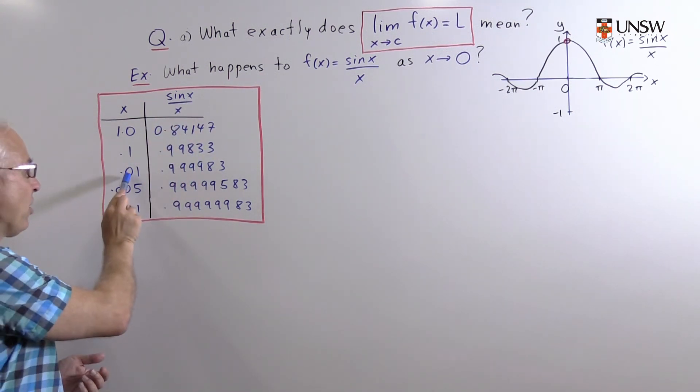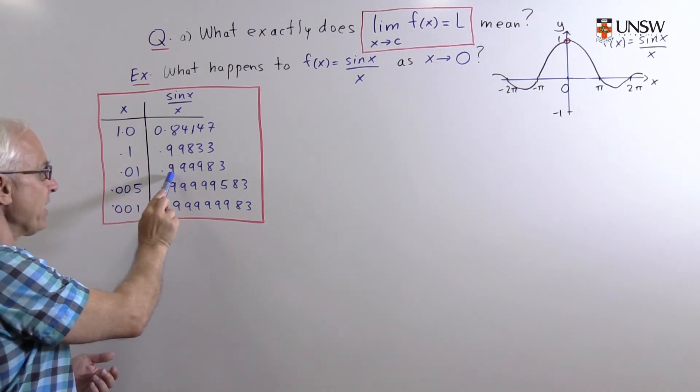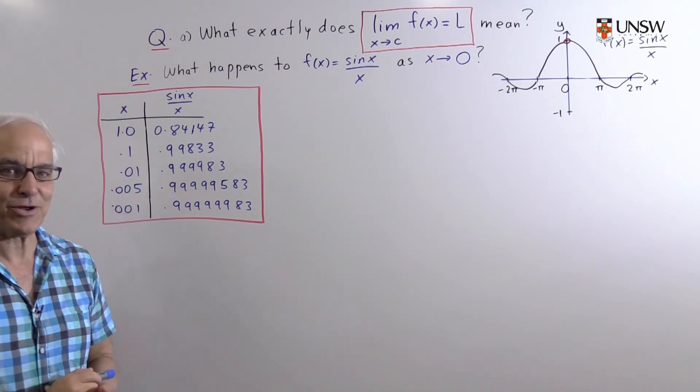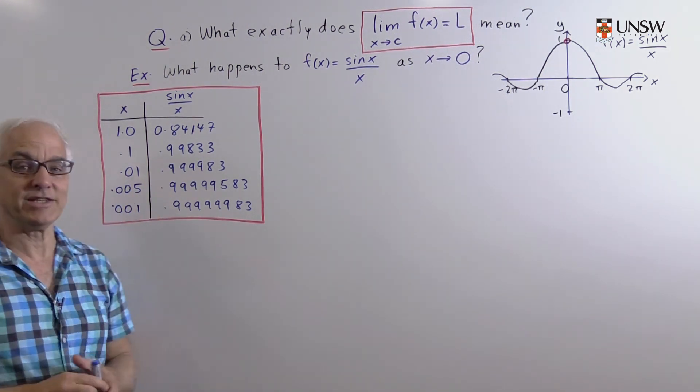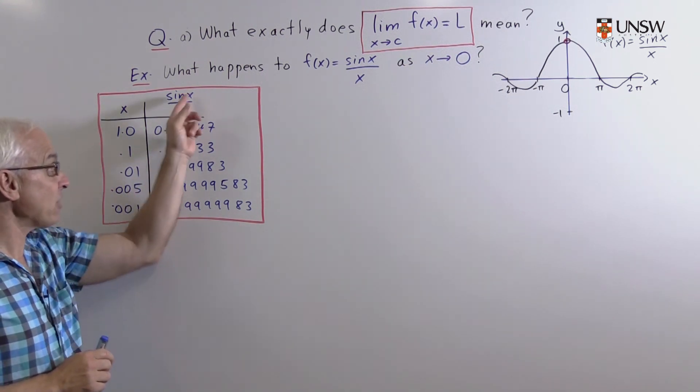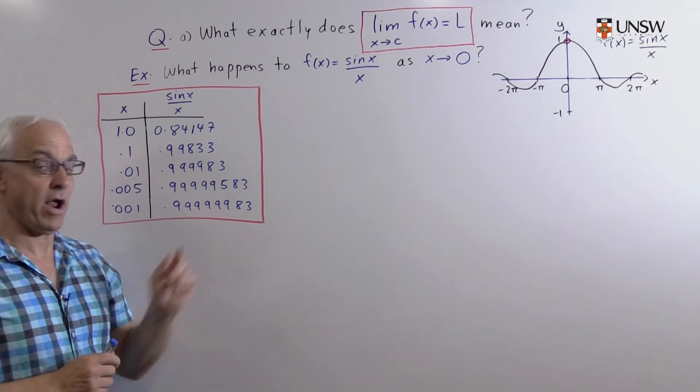We make x smaller yet, at 0.01 we get 0.999983, and here are two even smaller values closer to zero which really strongly suggest to us that as x approaches zero, the actual value of sine x over x approaches one.